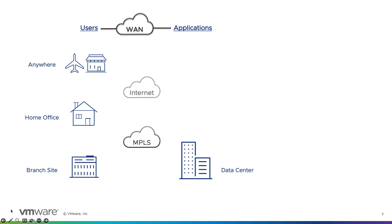To connect the remote offices to the data center, a private WAN link was used. This was traditionally the case — these private links were procured from a service provider. MPLS is a very popular private WAN link. These links were reliable, as the service provider guaranteed a certain availability. They were also secure because it was the service provider's private network.